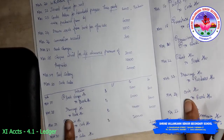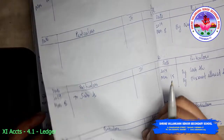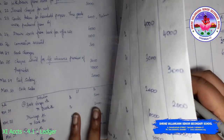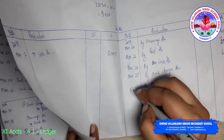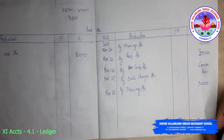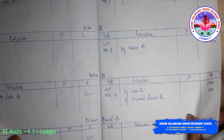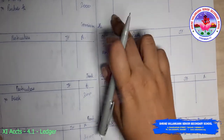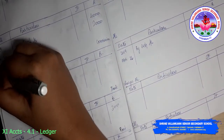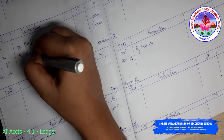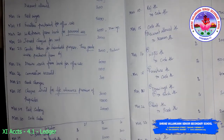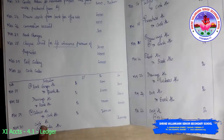Then drawings to bank — so we need to write in bank 'by drawings'. March 28, 3000 — so bank account is over. Next to drawings account: drawings account to bank, March 28, 3000 — so you write March 28 'to bank account', amount 3000. Next step — this is over.